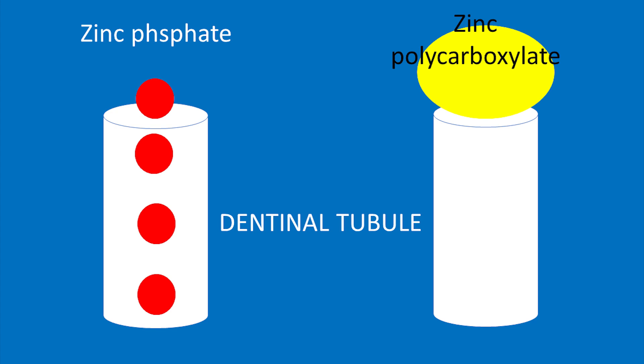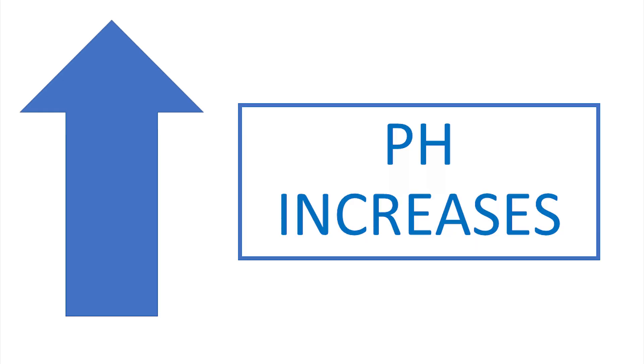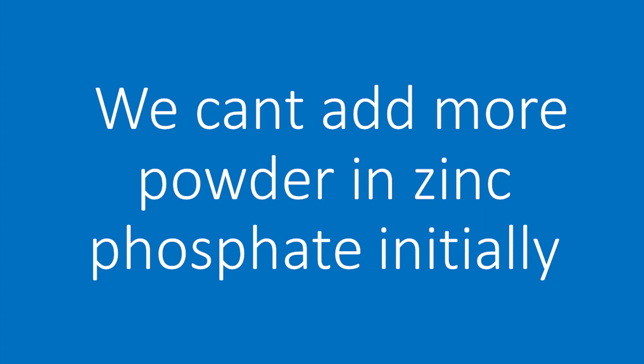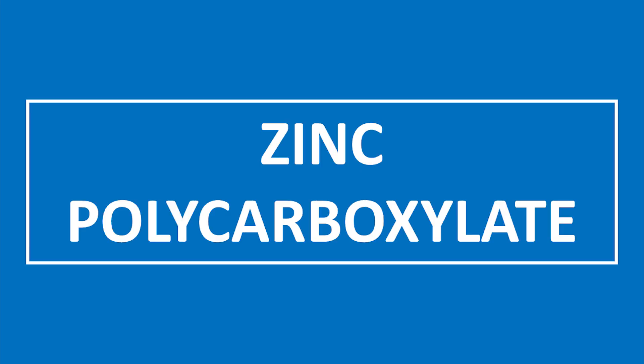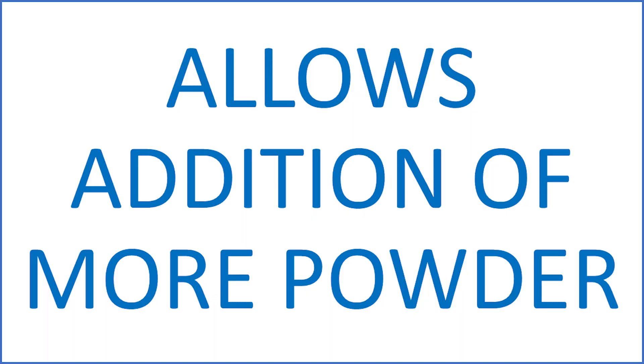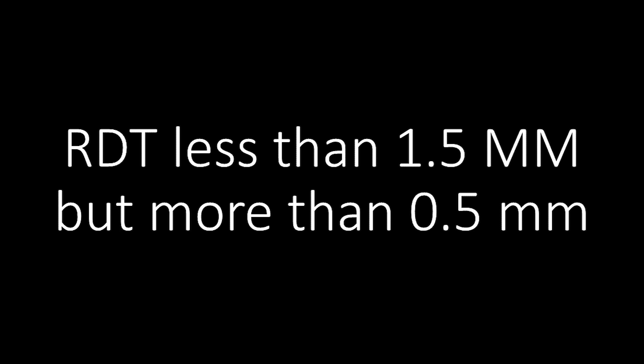And the second reason is how much powder you can add into the liquid in initial phases, which will definitely increase the pH, making it less acidic. In zinc phosphate, we cannot add a lot of powder in initial phases because it is an exothermic reaction and it affects the viscosity of the cement. However, in zinc polycarboxylate, in initial phases you can incorporate a lot of powder, hence increasing the pH drastically even in the initial phases. That's why you can give zinc polycarboxylate as a base even if the remaining dentinal thickness is less than 1.5 millimeters.